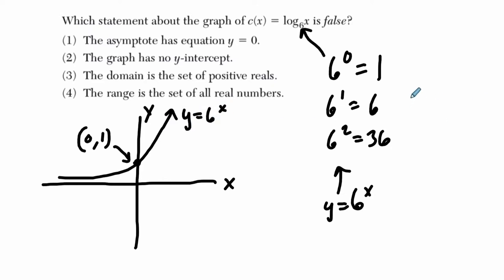But our logarithmic curve is reflected over the line y equals x. So we essentially take all of our x and y values and reverse them. So instead of 0, 1, it's now going to be 1, 0 here. And the logarithmic curve is going to go like this. It's going to be a nice reflection.